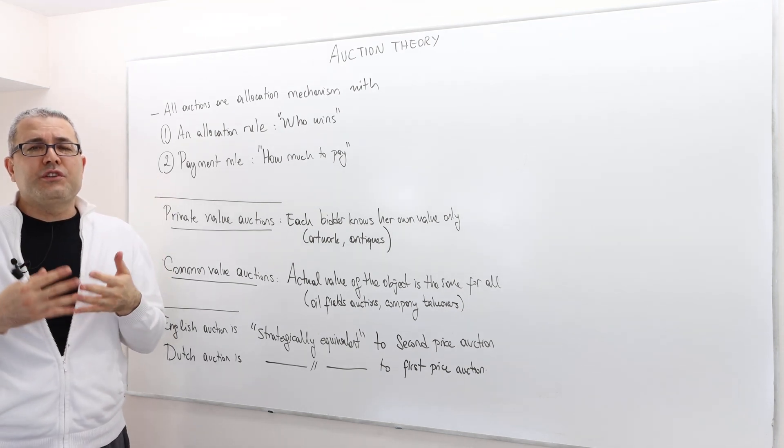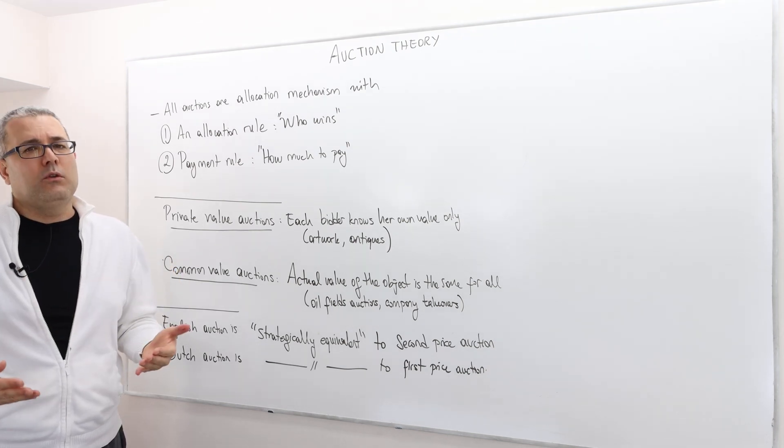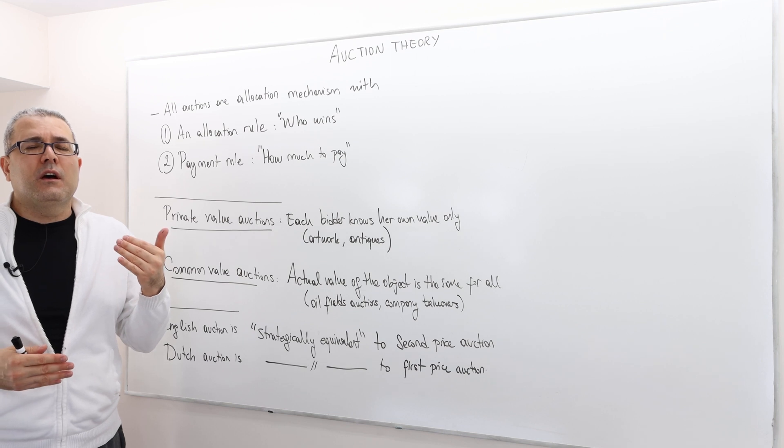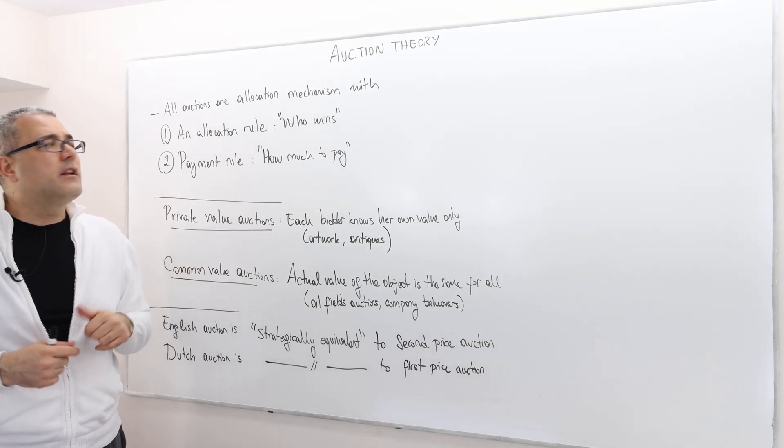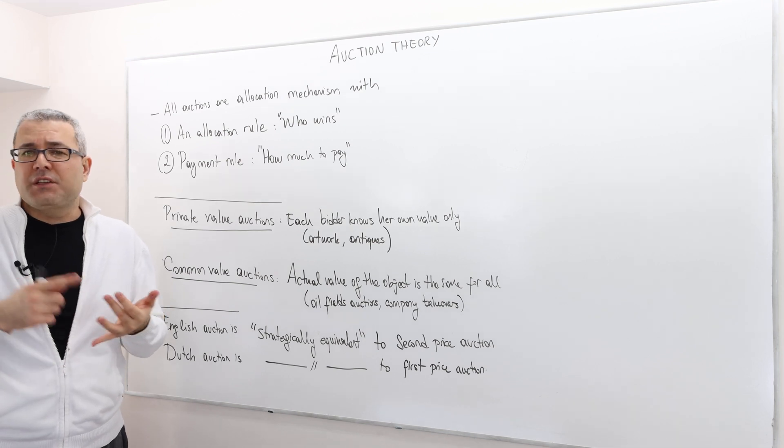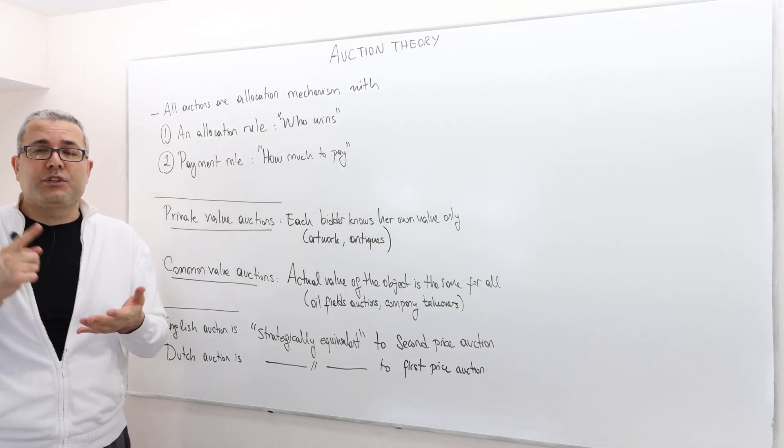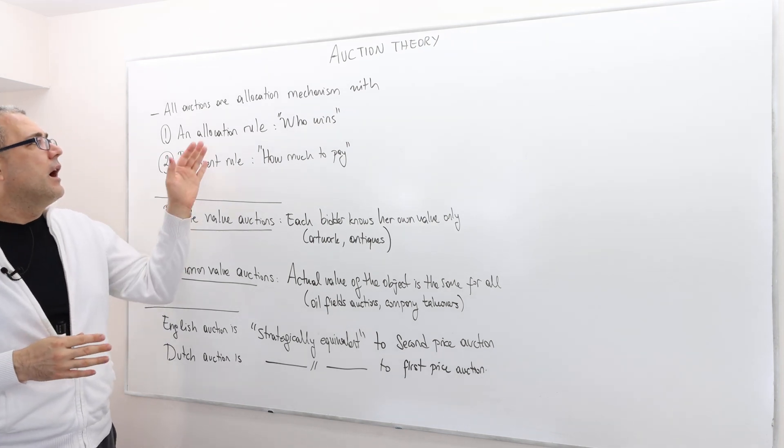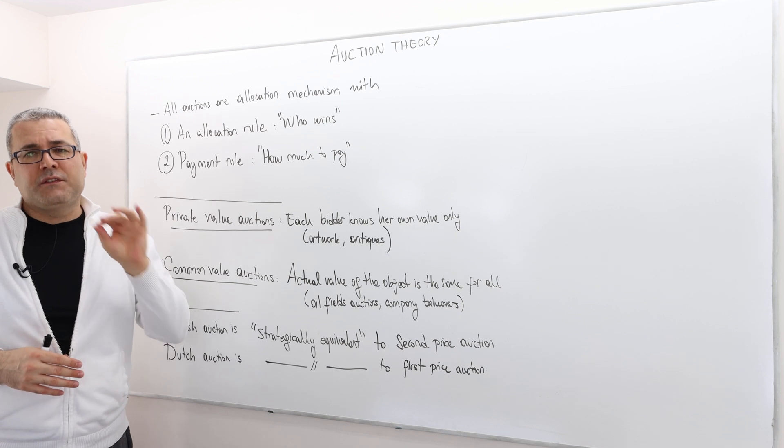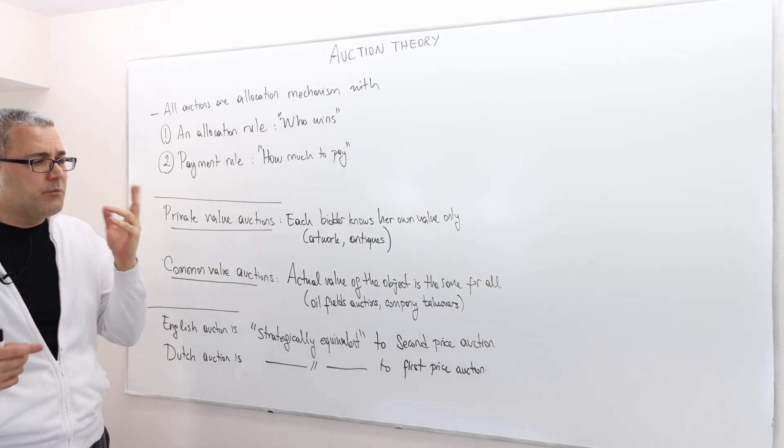Basically, it's the rule which determines who is going to be the winner. In almost all auctions, the winner is the bidder who makes the highest bid. Remember the first price, second price, third price, British or English auction, Dutch auction, all pay auction. So there, the winners are always the highest bidder. But this is not always the case.